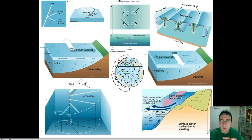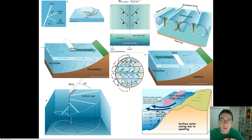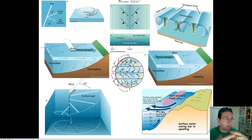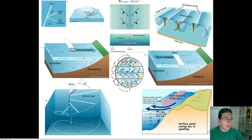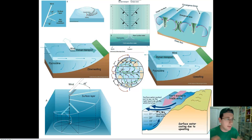Another important current pattern is the Ekman transport system. When we talked about the water chapter, we talked about how life depends on this system because of upwelling. We're going to talk about how this actually circulates the nutrients and the temperature of the ocean water and has a lot of effect for us.